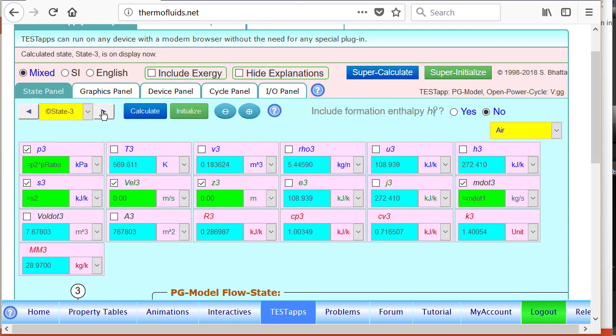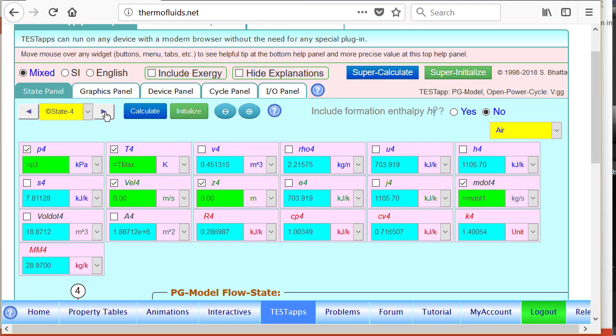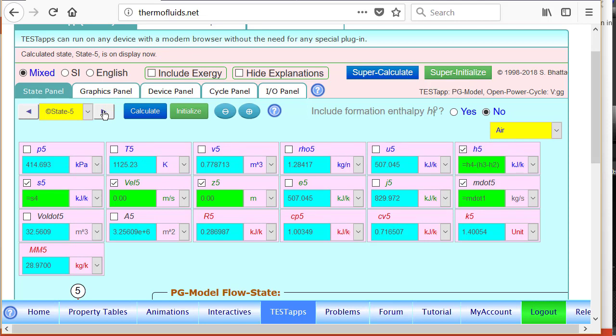At state three we have increased the pressure by using the compressor. It raises the pressure from p2 to p2 times p ratio, that is by a factor of 10 in this case, and entropy remains constant, mass flow remains constant. So state three is found at the end of the compressor. Then we take it to the combustor and raise the temperature at state four to t max. Pressure doesn't change, mass flow doesn't change, so state four is found.